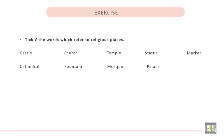Now take the words which refer to religious places. The first word related to religious places is Church. The second one is Temple. The third one is Cathedral. And the last word is Mosque.